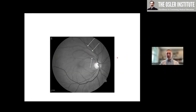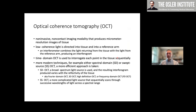So we started talking about photos and red-free. Let's jump into OCTs. OCTs are non-invasive, non-contact imaging modalities that produce micrometer-resolution images. Basically, you're taking multiple A-scans to produce a B-scan cross-sectional image of the back of the eye. This uses low-coherence light directed into the tissue with a reference arm. An interferometer combines the light returning from the tissue with the reference arm light to produce an interferogram.